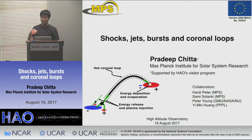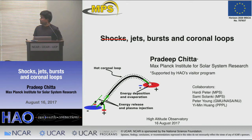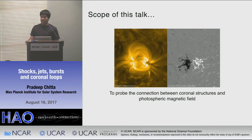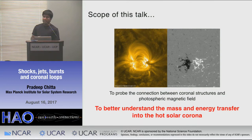Coronal loops are dense plasma arcades that are hot and suspended by the magnetic field in the solar atmosphere. The scope of the talk is fairly straightforward. I would like to establish, as I go along, the connection between the coronal loops that we see to their photospheric footprints. Establishing such a connection would eventually give us better understanding of mass and energy transfer into the solar corona.